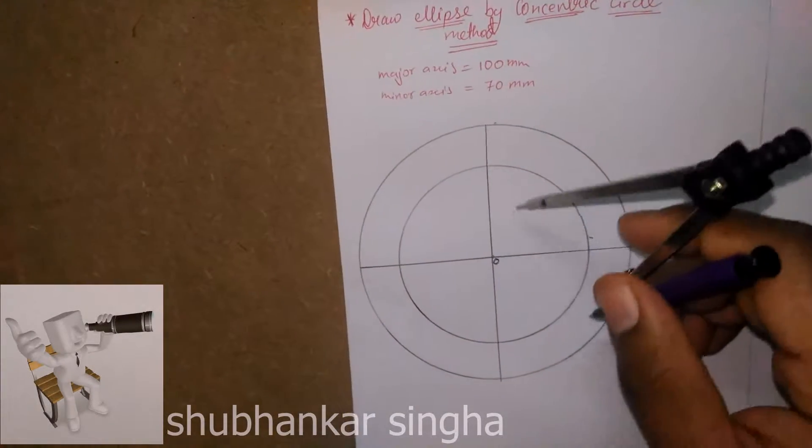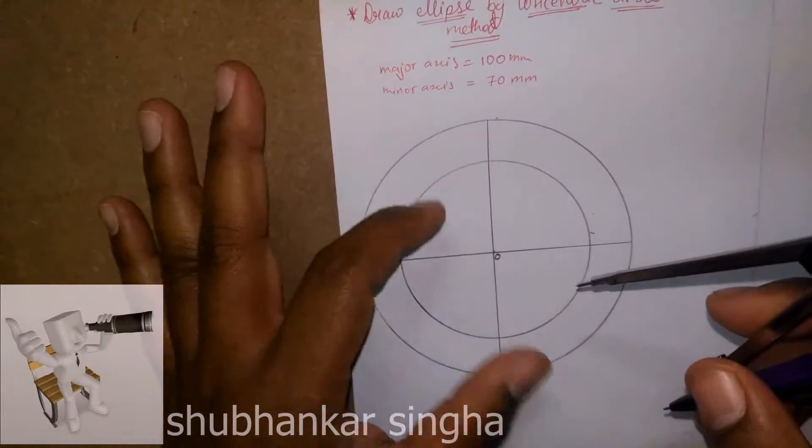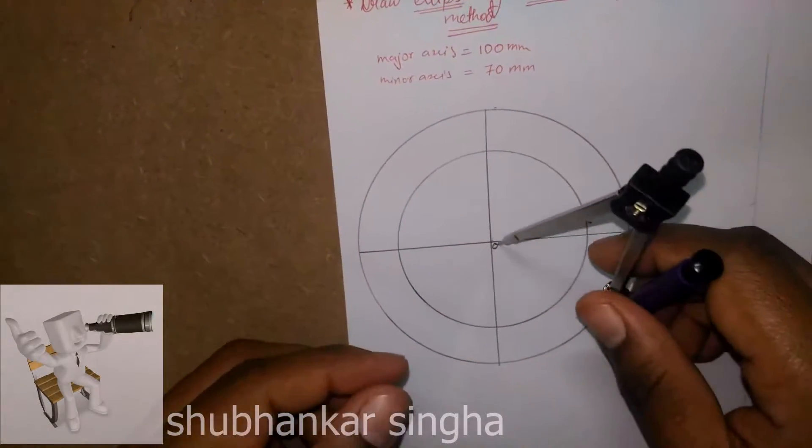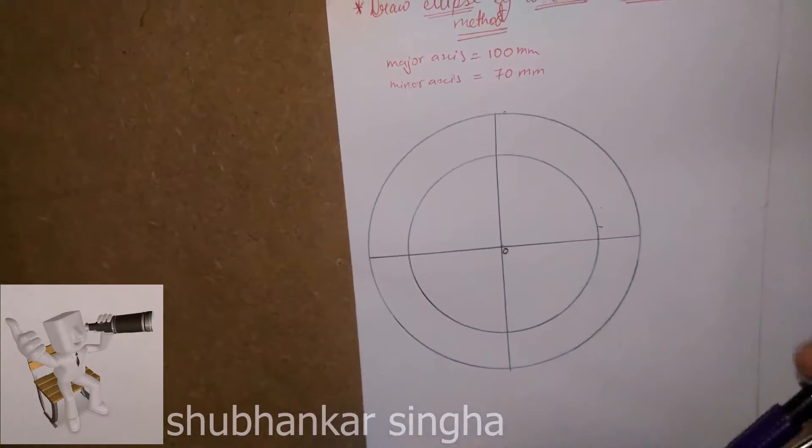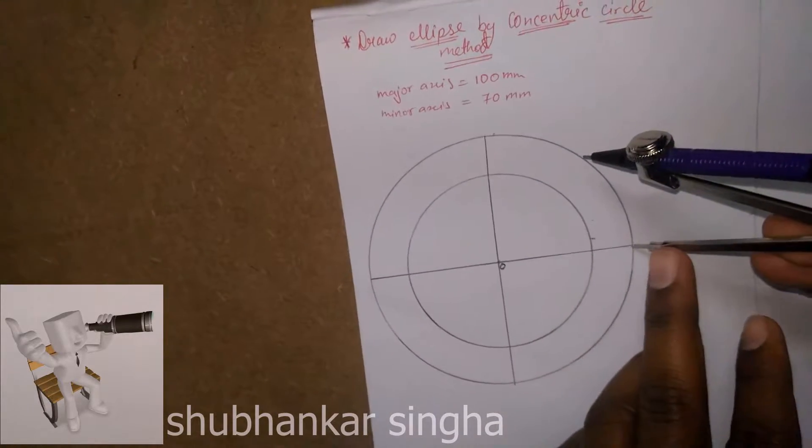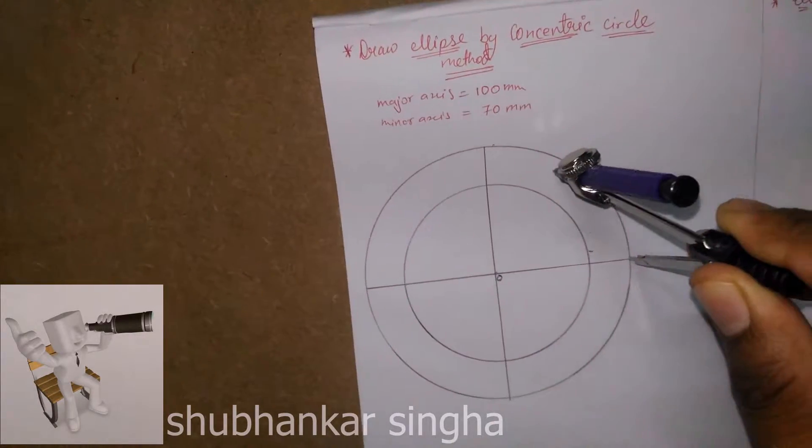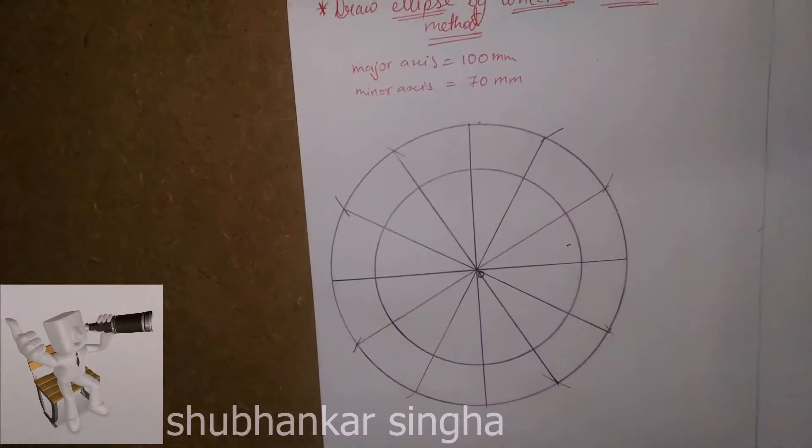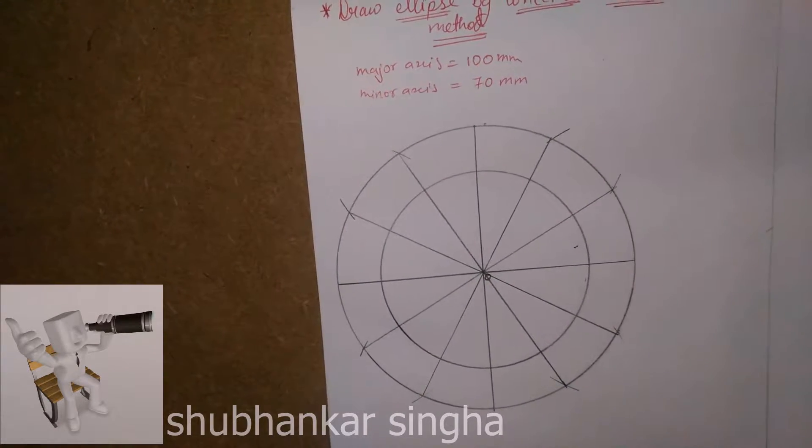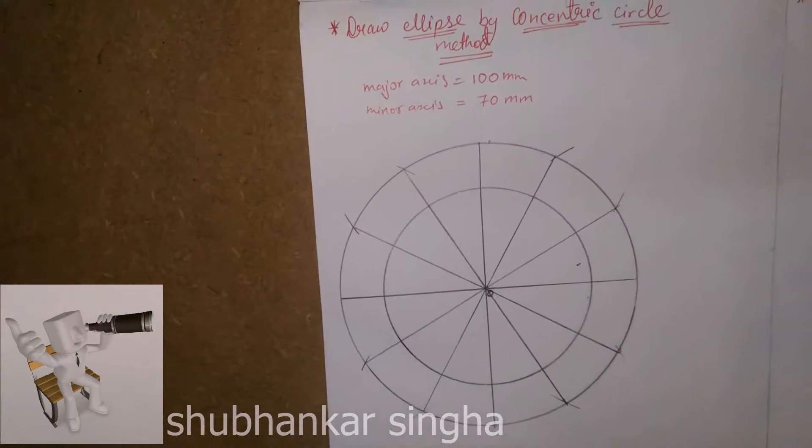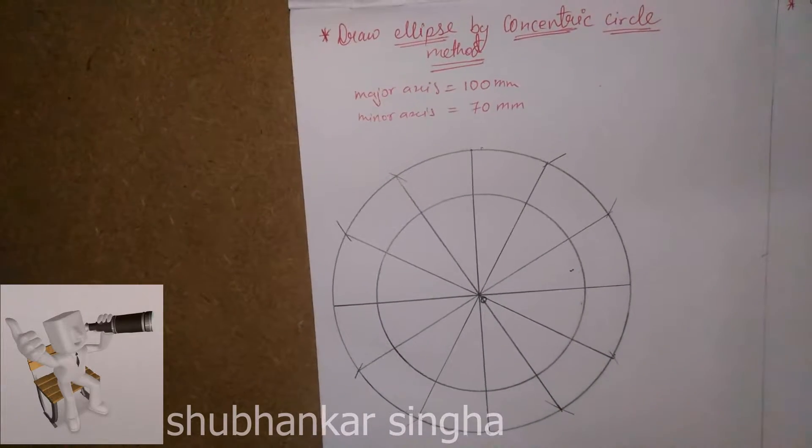Now we have two circles from the same center. We have to divide these two circles into 12 equal parts. Here we have the 12 points of the two circles, 12 equal parts.